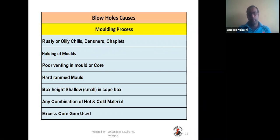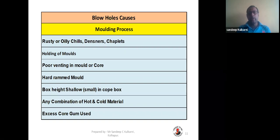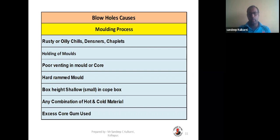In the molding process: rusty, oily, or wet chills, denseners, or chaplets are a cause. When using any chills, chaplets, or denseners, make sure they are properly dried with no rust, oil, or moisture. Regarding mold holding — holding molds too long allows moisture to get inside the mold and cause blowholes. The maximum time you can hold molds is 1.5 hours; you must pour all molds within 1.5 hours.